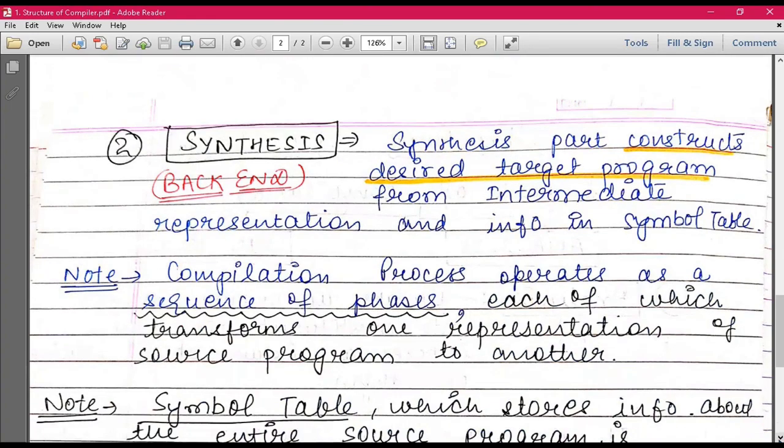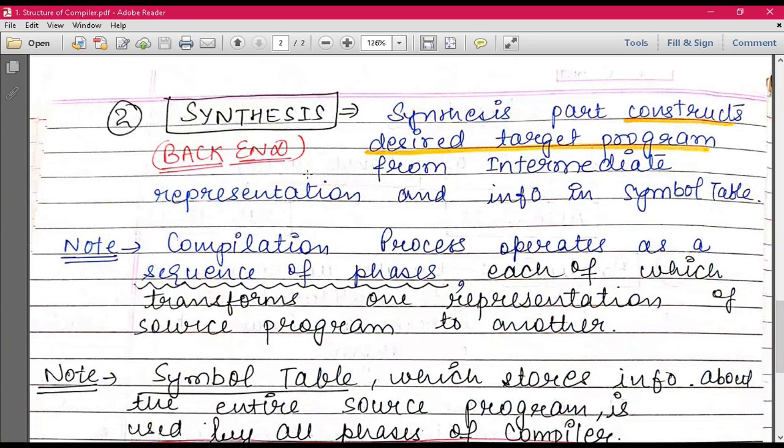Next part is your synthesis part, which is also called as back-end. And basically, what do we do in this part? This part constructs desired target program from intermediate representation and information in symbol table. So we have seen that the first part, the analysis part, we have done our code in intermediate representation.